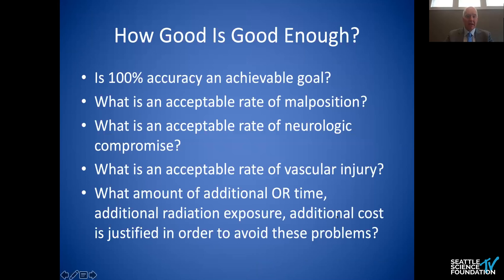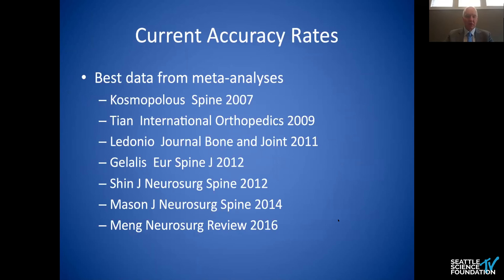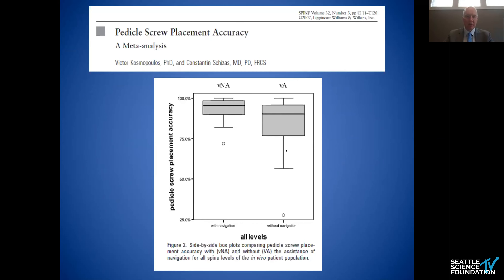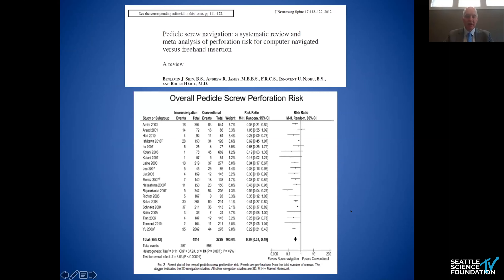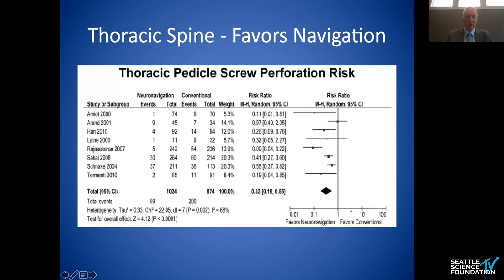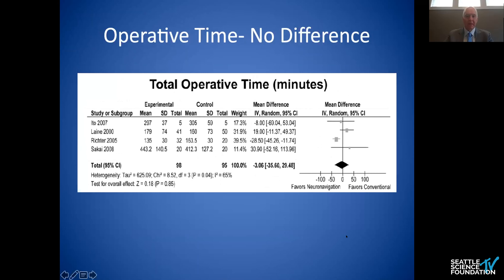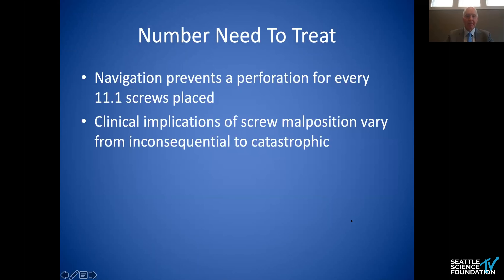How good is good enough? Is 100% accuracy achievable? What is an acceptable rate of malposition, neurologic compromise, or vascular injury? What OR time and radiation exposure is justified? The best data exists in meta-analyses comparing pedicle screw placement with and without navigation — there's no question it improves accuracy, in both pediatric and adult populations, in both thoracic and lumbar spine. Operative time has not been shown to be different, and blood loss has probably decreased slightly. If you're putting in 11 screws, navigation will help you avoid one malposition. Screw malpositions range from inconsequential to catastrophic, and not all are problematic.